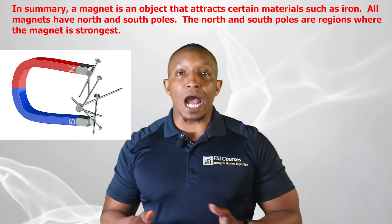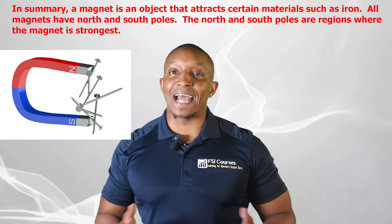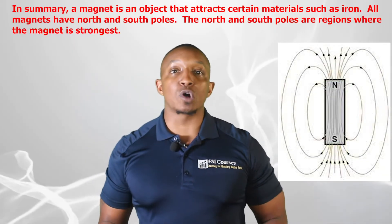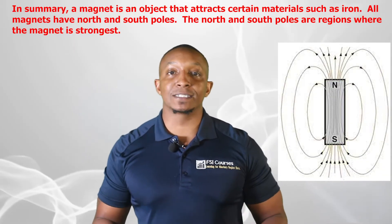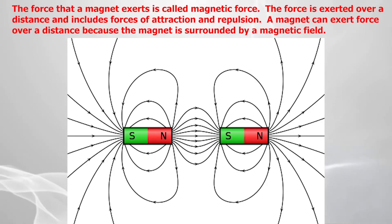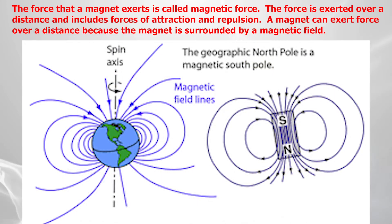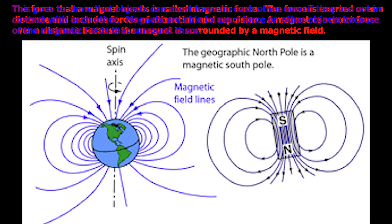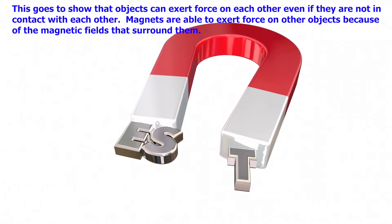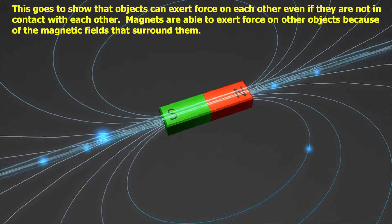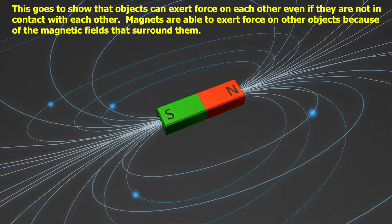In summary, a magnet is an object that attracts certain materials such as iron. All magnets have north and south magnetic poles, which are the regions where the magnet is strongest. The force that a magnet exerts is called magnetic force — exerted over a distance and including forces of attraction and repulsion. A magnet can exert force over a distance because it is surrounded by a magnetic field, which means objects can exert force on each other even if they are not in contact. Magnets exert force on other objects because of the magnetic fields that surround them.